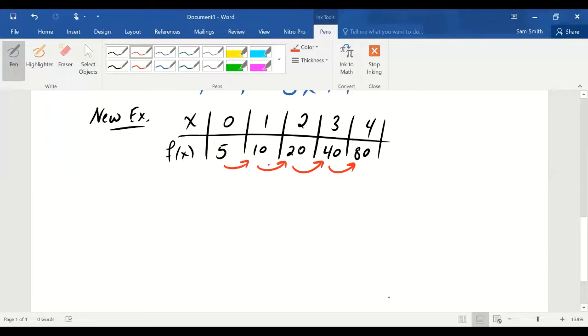In this case, you know, 5 to 10, that's an addition of 5. But 10 to 20, that's an addition of 10. So, unlike before, this time, there's no consistency in the amount that's being added. However, this time, there is a consistency in the amount that's being multiplied. These y values are being doubled, multiplied by 2 each time.